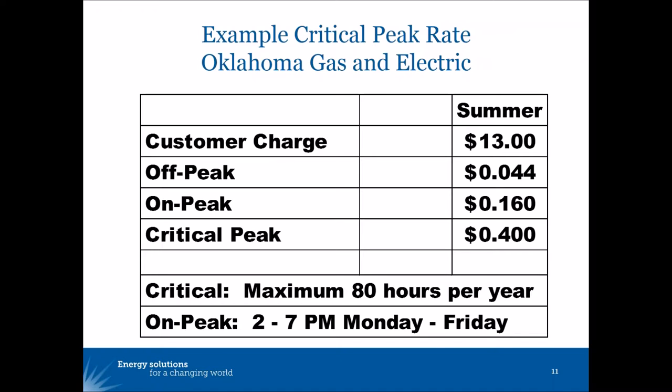The Oklahoma Gas and Electric critical peak rate is called Smart Hours. It's an optional rate. The utility will determine at least two hours in advance that there's going to be a critical peak when it will be difficult and expensive to provide all of customers' normal energy demands. Customers get notification by text, by email, or by phone, at least two hours in advance so they can adjust their behavior. During that period, the critical peak price applies.